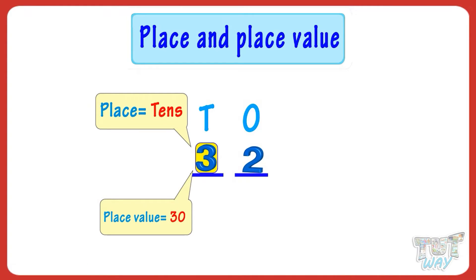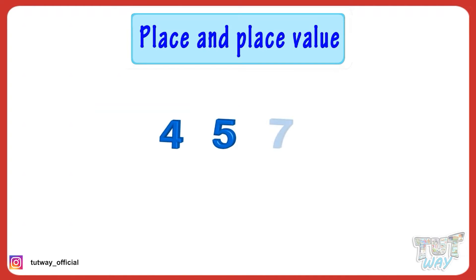Let's learn the concept with more examples. We have a number four hundred and fifty-seven. Let's start with seven. Its place is ones place and place value is seven ones, that is seven.